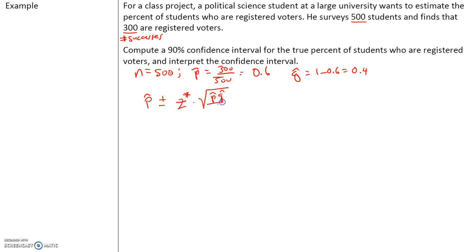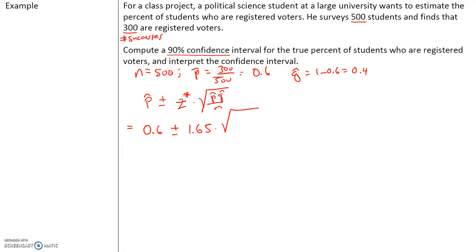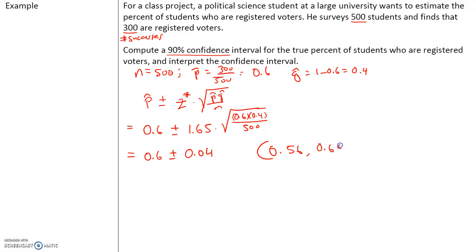Our formula is p-hat plus or minus our critical value times the square root of p-hat q-hat all over n. P-hat is 0.6. Our critical value — we're looking for a 90% confidence interval — so our critical value is 1.645, or rounded to two decimals, 1.65. So plus or minus 1.65 times the square root of p-hat 0.6 times q-hat 0.4 divided by n which is 500. This gives us 0.6 plus or minus 0.04.